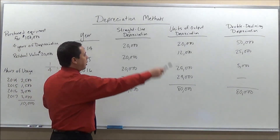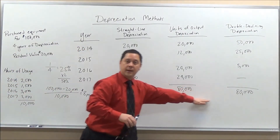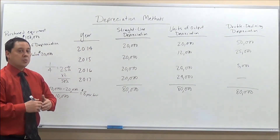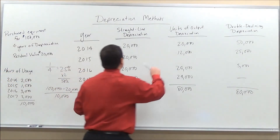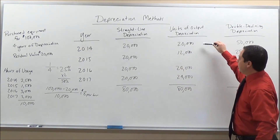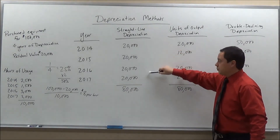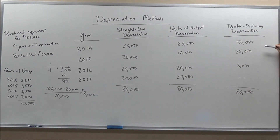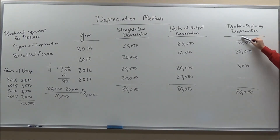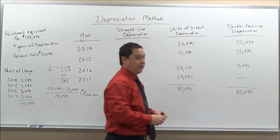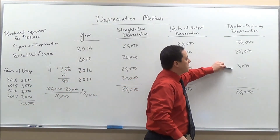Looking at all three methods, we ended up with the same $80,000 total depreciation across the board. But the yearly values differ, and these differences are reasons why companies may choose one over another. With double declining balance, we take a lot of depreciation upfront and very little at the end — realizing that depreciation expense early on lowers our income, and therefore we pay less taxes. That's one of the reasons why companies may choose this method.